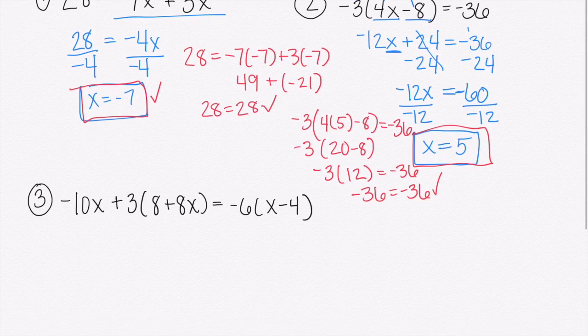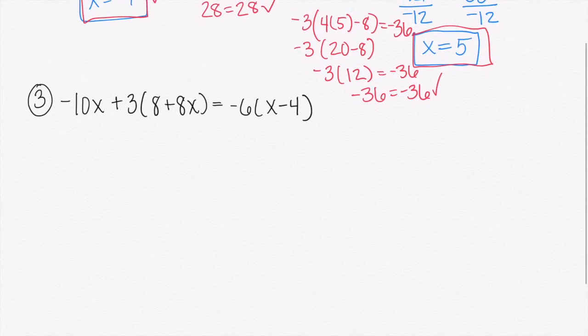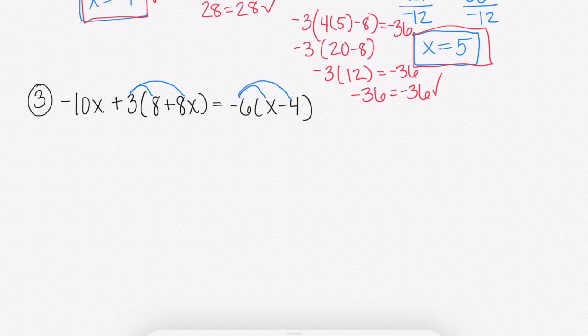My last one here. It looks big and scary. But it's not. We just have to distribute first. Wherever you see those parentheses with the number on the outside, we're going to distribute. So this time, we just have two places. We have it on both sides of the equal sign. So we have our 3 that we have to distribute, and we also have our negative 6 we have to distribute. So that's going to be our first step. Get rid of those parentheses by distributing.